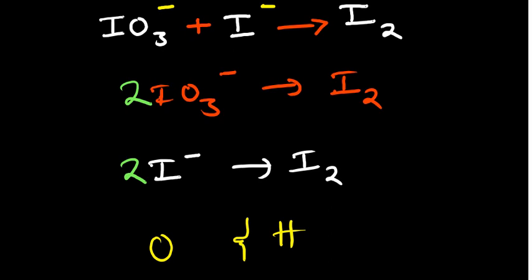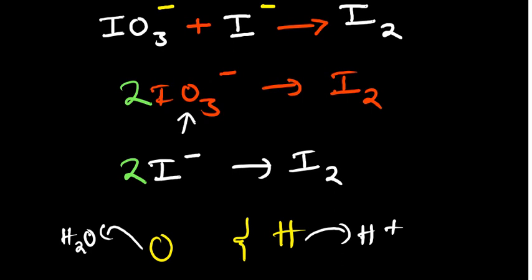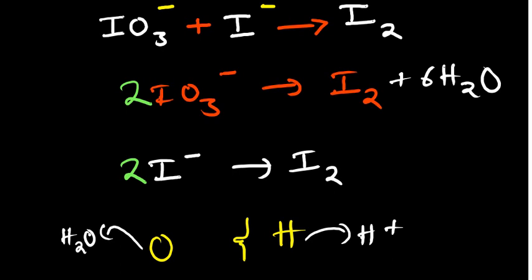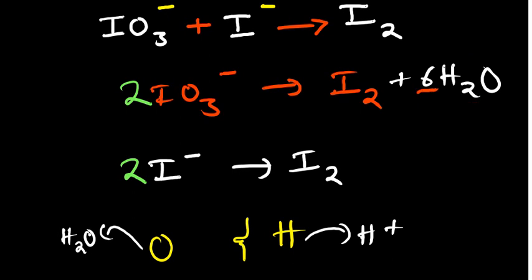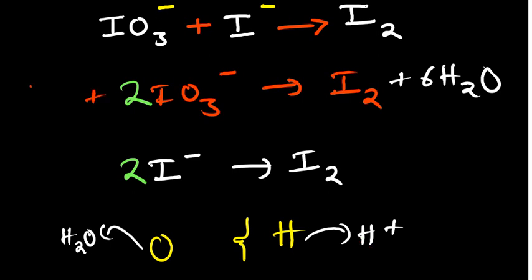The second step is to balance oxygen, which we do by adding water, and then balance hydrogen by adding hydrogen ions. For the first half reaction, we have six oxygen atoms — multiplying the subscript three by the coefficient two gives six. So we add six water molecules to the right hand side. Since we've introduced six water molecules, we also need to balance the hydrogen: six times two is twelve, so we add twelve hydrogen ions to the left hand side.